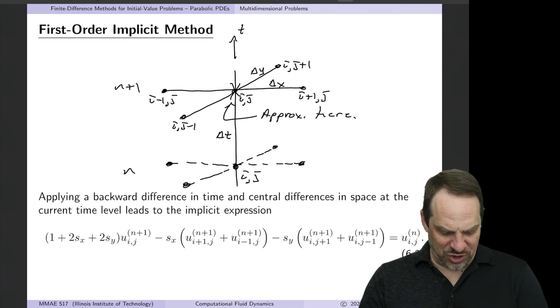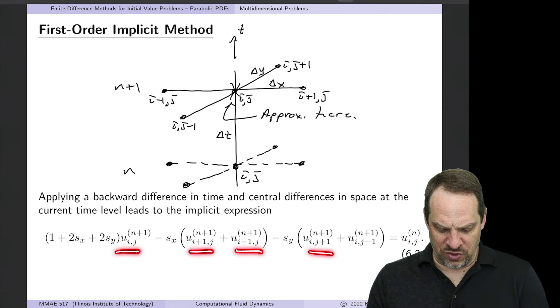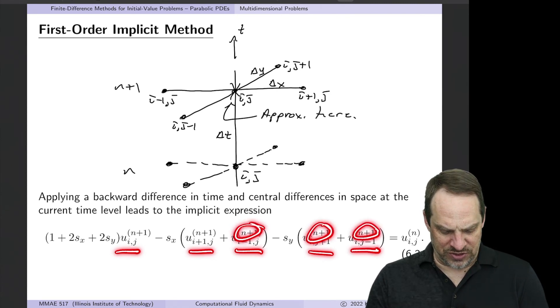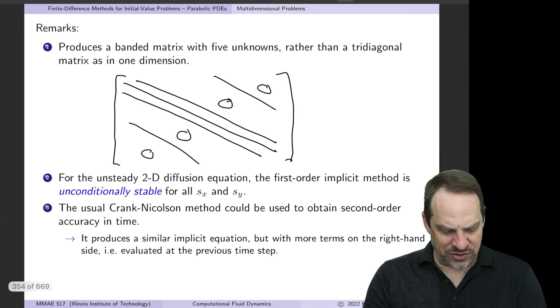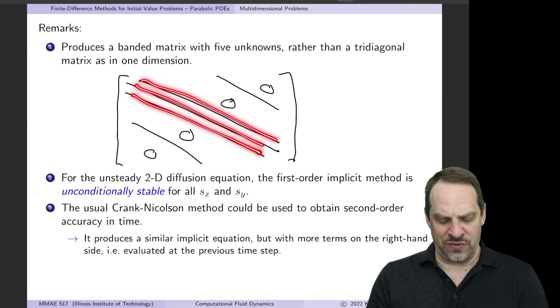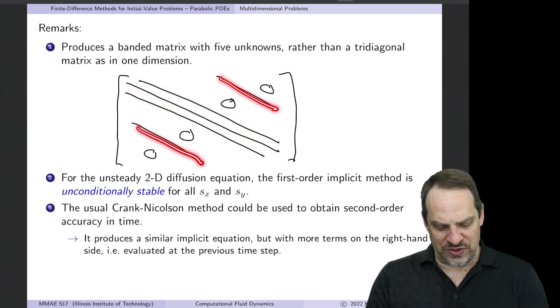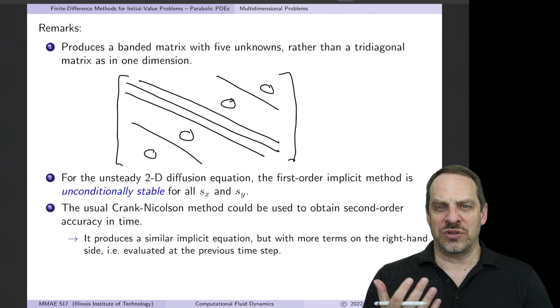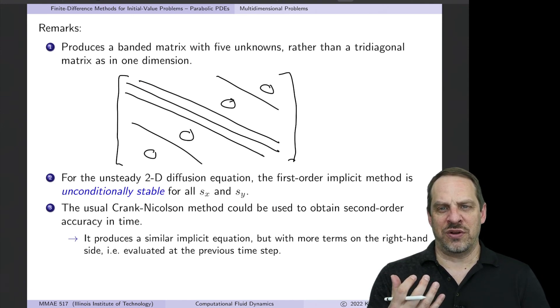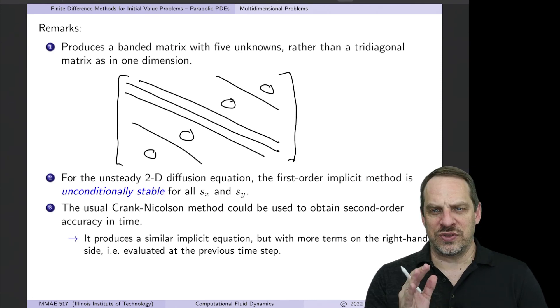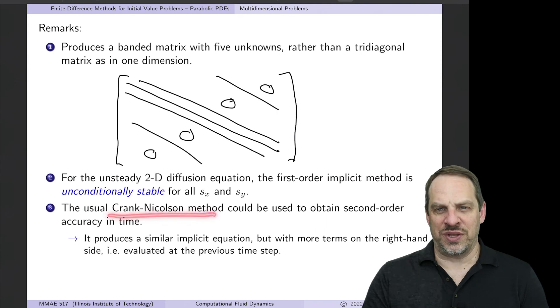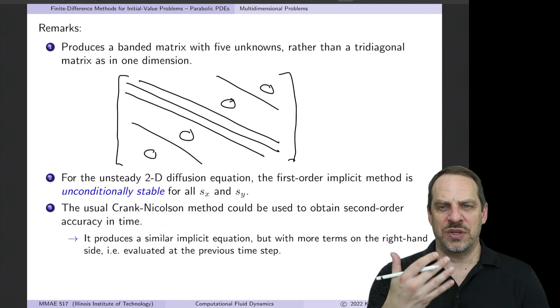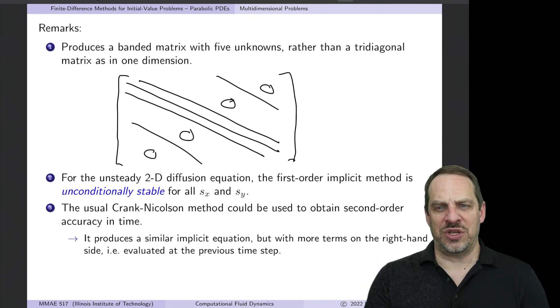Now why didn't I go through this in detail? Because look what happened. We now have one, two, three, four, five unknowns at the n plus first time step. So rather than being tridiagonal, we actually have five unknowns. And so it's going to look something like this. A tridiagonal system, you would have the three diagonals in the center that would have non-zero values. Now we also have these fringes out here and here with a whole bunch of zeros in between. So there is a structure to it, it's still a banded matrix, but it's no longer tridiagonal, and I can no longer use, therefore, the Thomas algorithm to solve our implicit equation. So this is not ideal. It is unconditionally stable for all values of Sx and Sy, so that's good. We could also apply the Crank-Nicholson method in order to get a second order in time scheme as well.